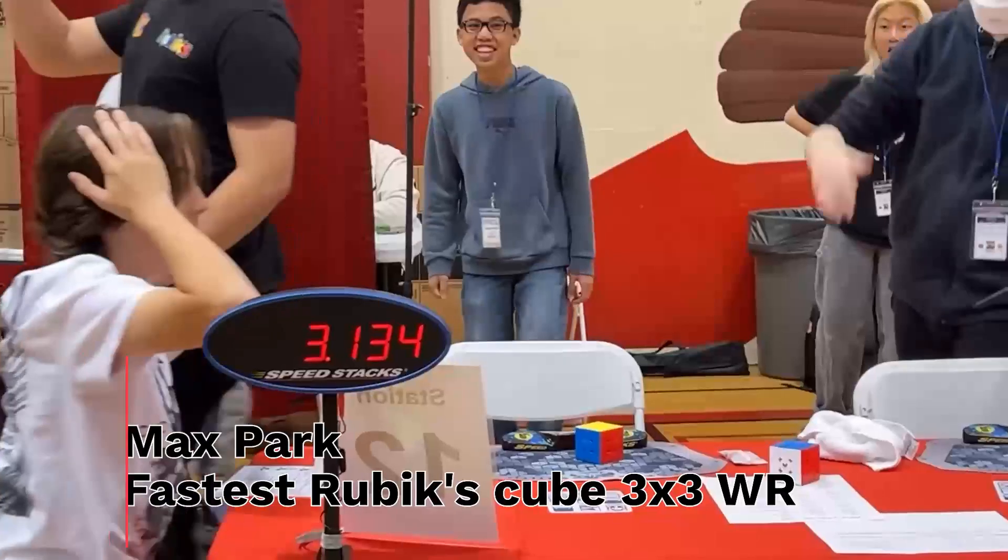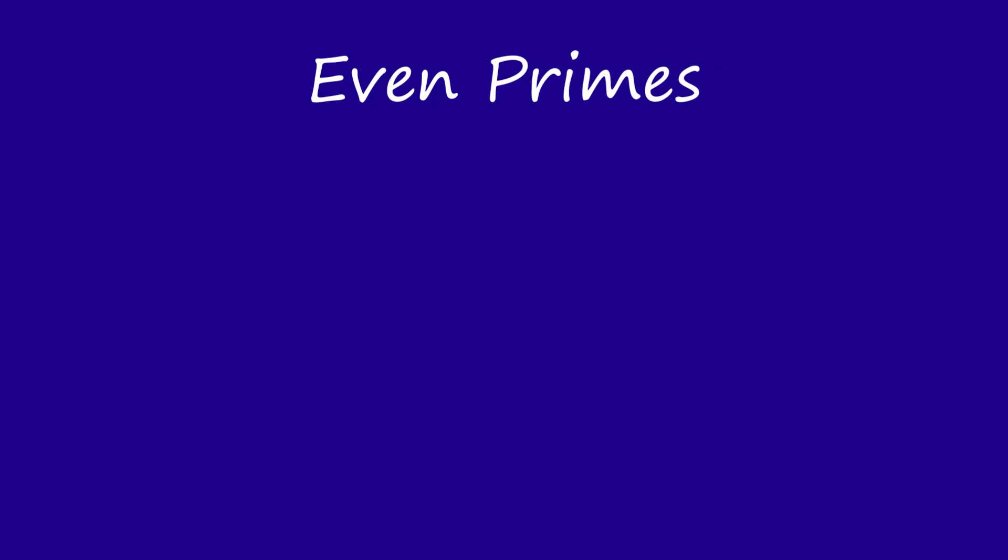There are an infinite number of odd prime numbers, but there is only one even prime number: two. This is because every other even number is divisible by two and hence isn't prime.